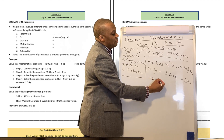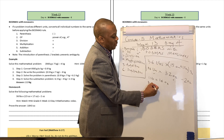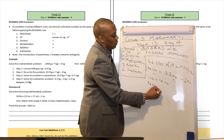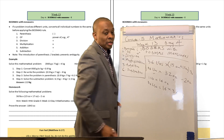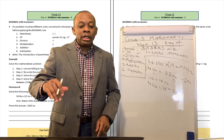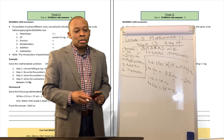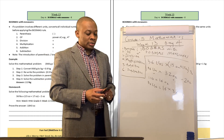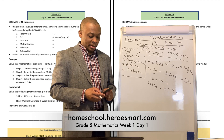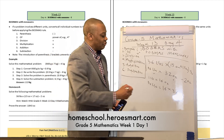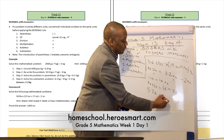One pound is equivalent to 16 ounces. So 36 pounds will be equivalent to 16 multiplied by 36. Let's get our calculator to go ahead and do that. So what is 16 multiplied by 36? That's going to be 576 ounces.